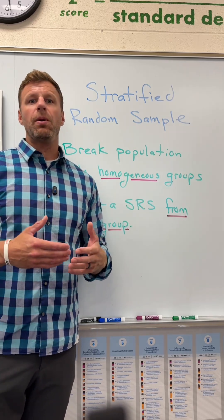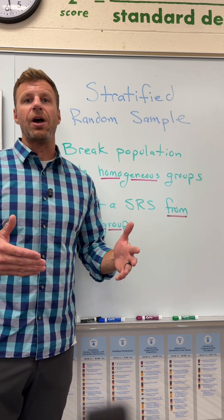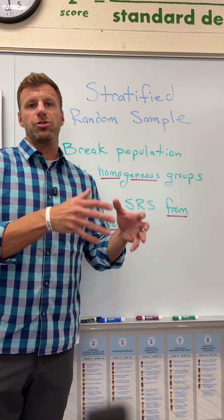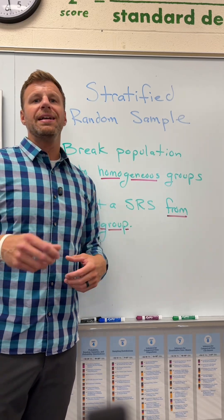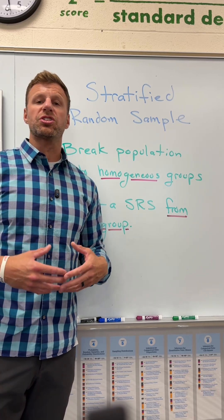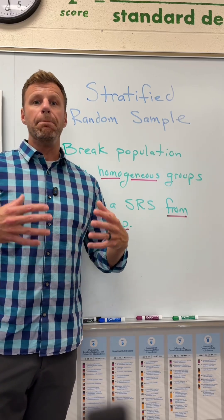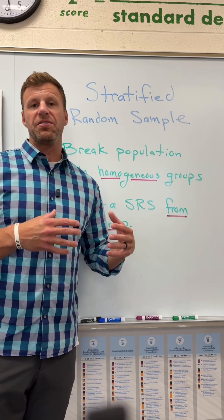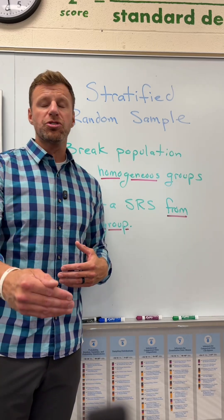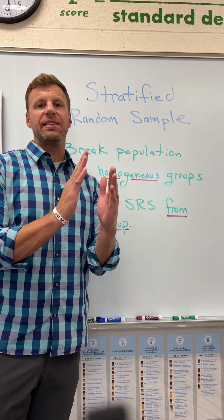So if we say we want to make sure we get freshmen, sophomores, juniors, and seniors, then you're going to stratify. There are your four homogeneous groups: freshmen, sophomores, juniors, seniors. Take a random sample from each of those groups. What this is going to do is reduce the variability in what it is you're measuring, because we are getting a much more representative sample, and the average height of our sample is going to be much closer to the true average height of the population, hence reducing that variation.